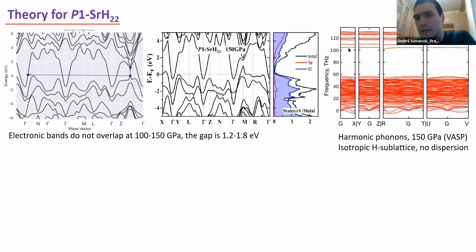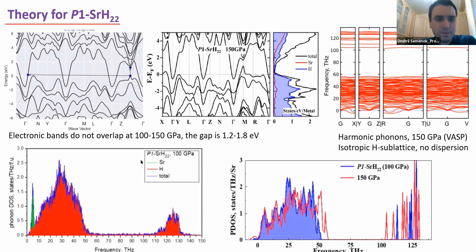We calculated harmonic phonons, harmonic phonon density of states and band structure, and found that even in harmonic approximation the compound is almost stable and does not demonstrate, especially in the hydrogen sublattice, any significant anisotropy, any significant dispersion. It means that the hydrogen sublattice is kind of liquid or amorphous hydrogen glass inside of this compound because almost no anisotropy. The hydrogen sublattice is just isotropic media where the strontium atoms are placed.